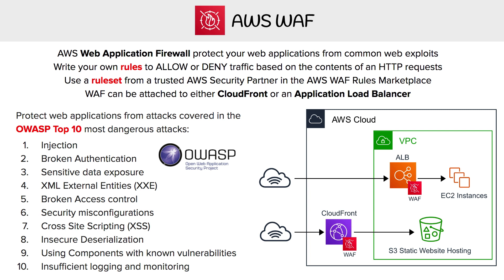Hey, this is Andrew Brown from Exam Pro. We are looking at AWS WAF, which stands for Web Application Firewall. It's going to protect our web application from common web exploits. The idea here is you're going to write your own rules that are either going to allow or deny traffic based on the contents of an HTTP request.